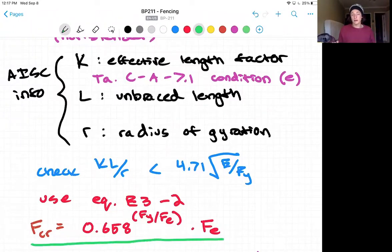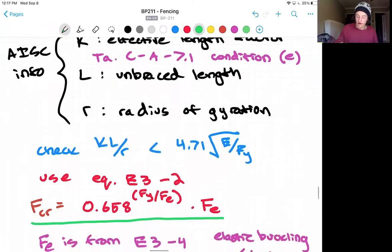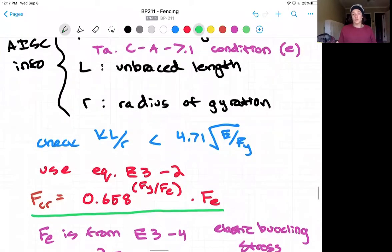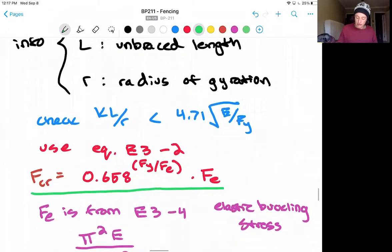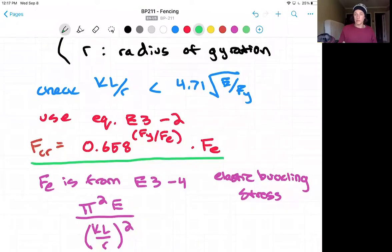The last piece of the puzzle is what our Fe is, which if we navigate to equation E3-4 just below that, that's our elastic buckling stress. And once again can be found from the information we looked up in the SHAPES database here.